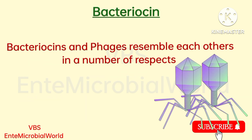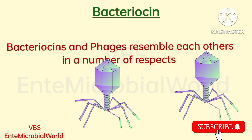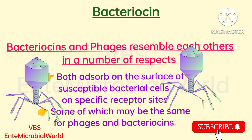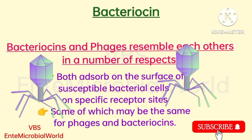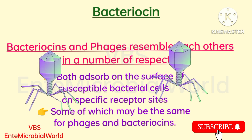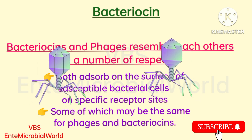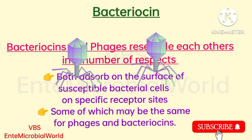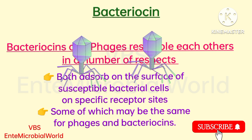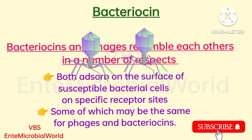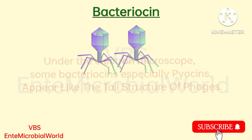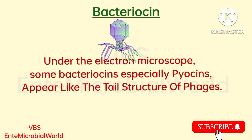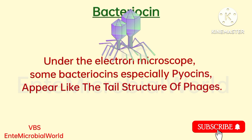Bacteriocins and phages resemble each other in a number of respects. Both adsorb on the surface of susceptible bacterial cells on specific receptor sites, some of which may be the same for phages and bacteriocins. Under the electron microscope, some bacteriocins, especially Pyocins, appear like the tail structure of phages.